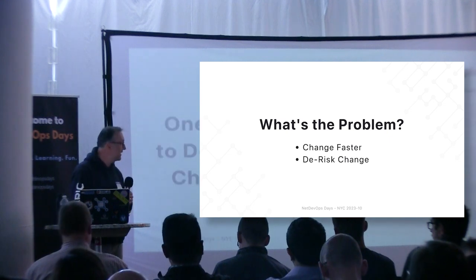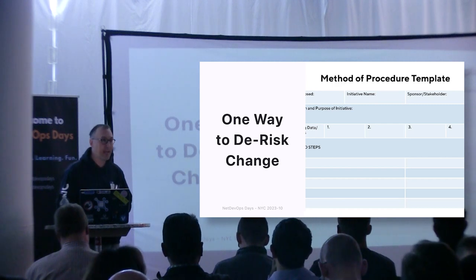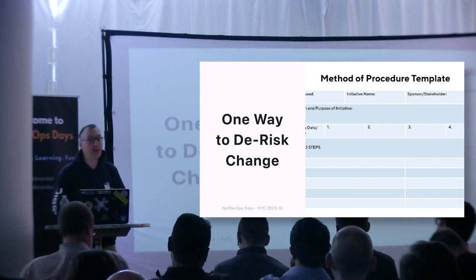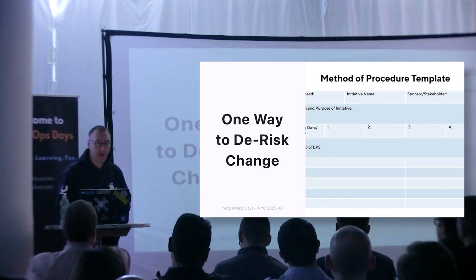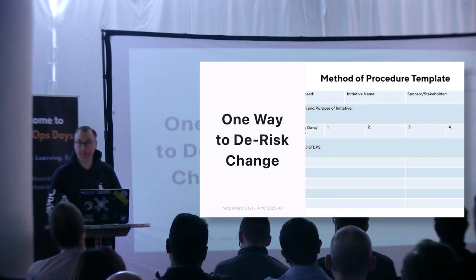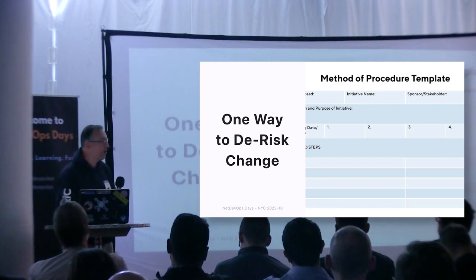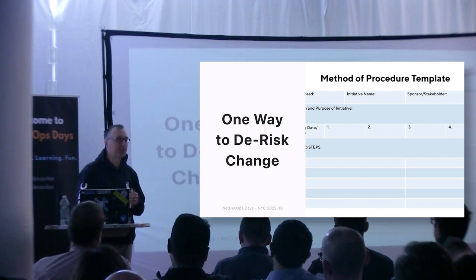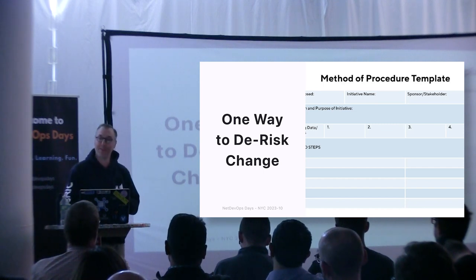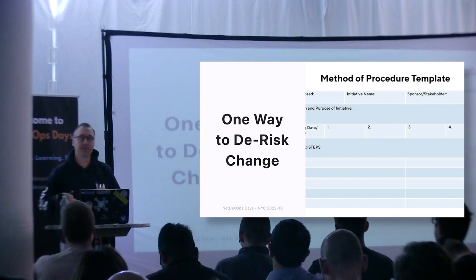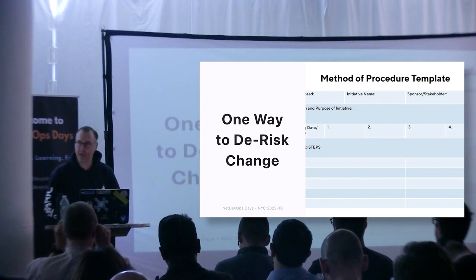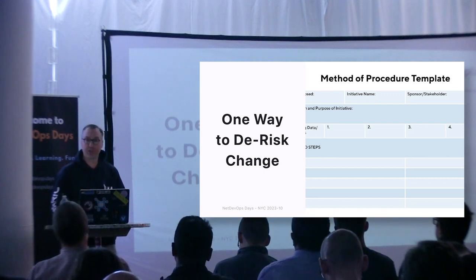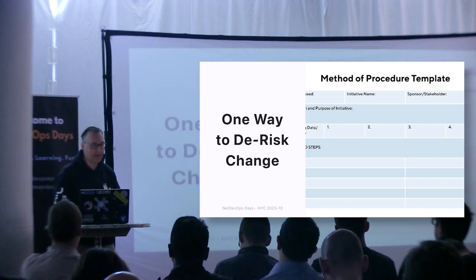How many people here have a nice long multi-page MOP — method of procedures — type document? This is the way we've done this for 20 years. The MOP is essentially trying to de-risk changes. In reality, it's a document of all the stupid mistakes you've made in the past, but it's never really a predictor of future mistakes. It ends up being a way to cover yourself — if you follow the MOP procedure, nobody can point the finger at you when things go sideways. But it doesn't give you much confidence that a change is going to actually do what you want, or that it won't have unintended consequences.